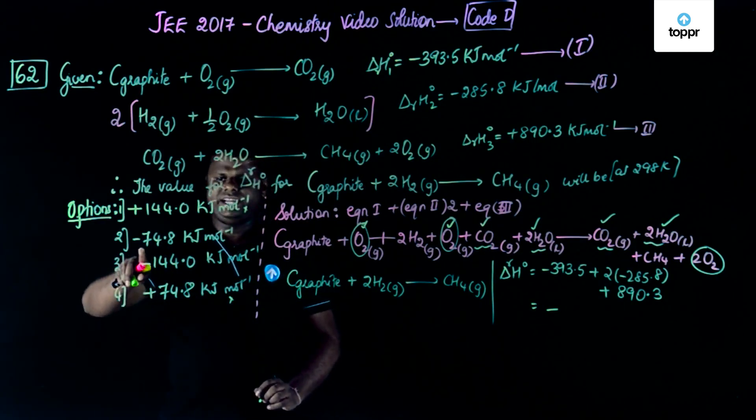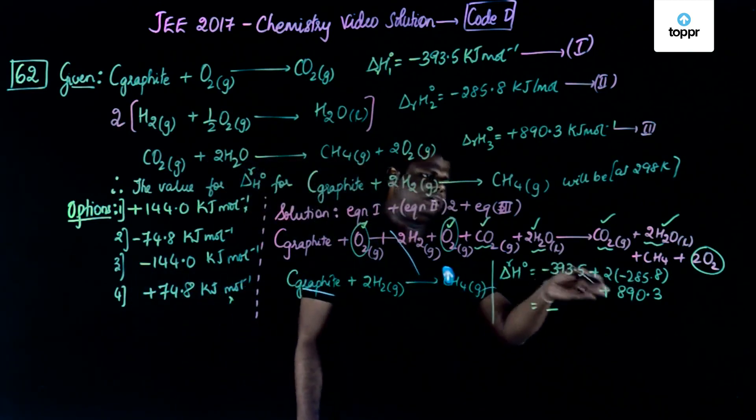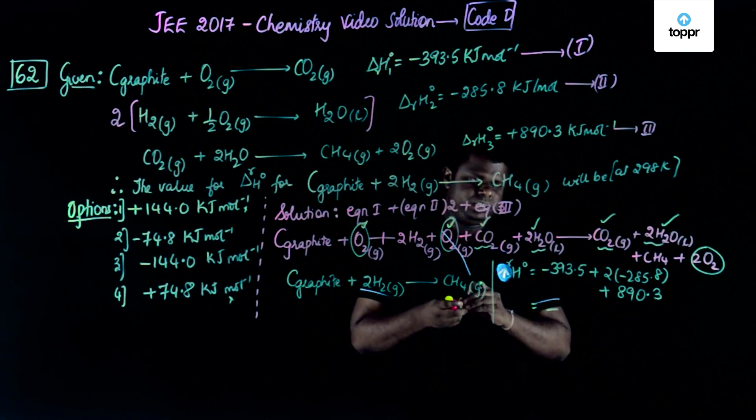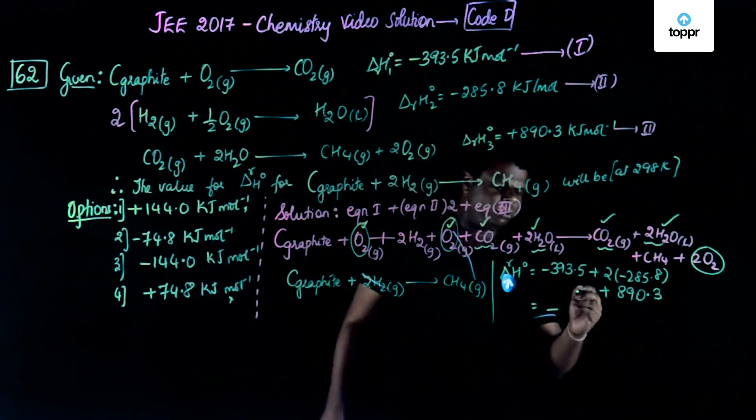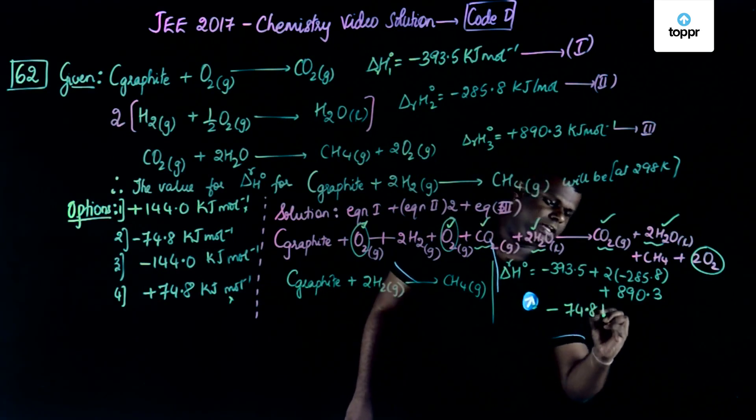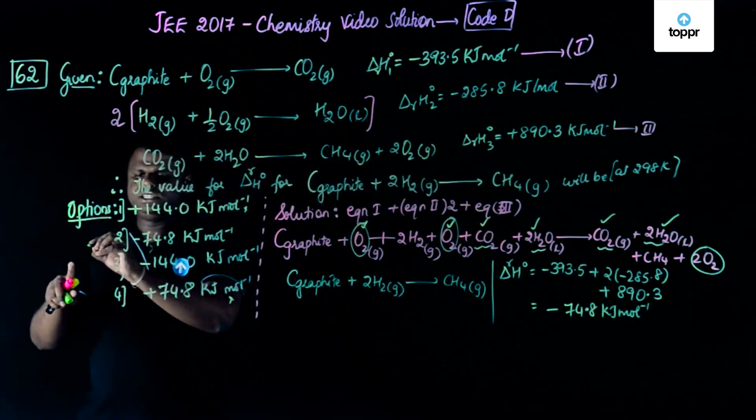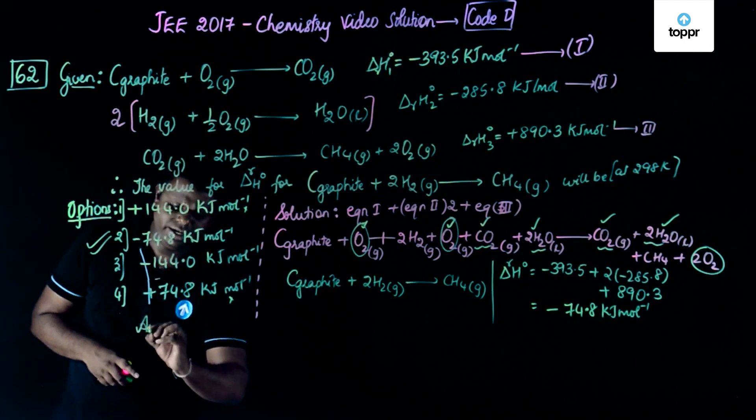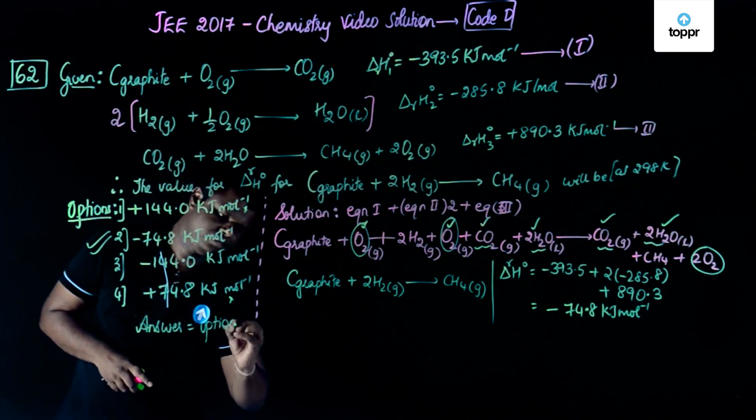That means the positive options showing positive values could be easily neglected. So we are left only with negative 74.8 and 144. If you do the calculation that makes life much more easier. But just see the difference is not that much. So it could be more like negative 74.8 kilojoules per mole which is the correct answer. The answer for this particular question is option number 2. So I'm just going to write answer is option 2.